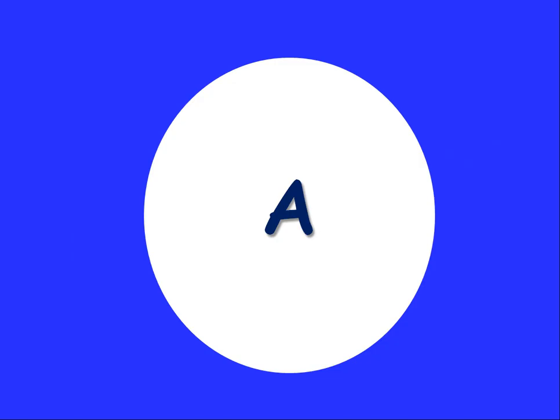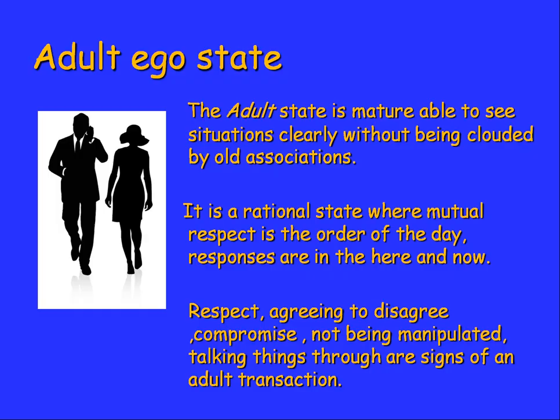The adult ego state is a mature state, able to see situations clearly without being clouded by old associations — old attitudes from parents or fears from childhood. It's a rational state where mutual respect is the order of the day and responses are in the here and now. Respect, agreeing to disagree, compromise, not being manipulated, and talking things through are all signs of an adult transaction.